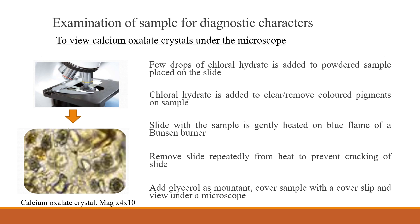The slide with the sample is gently heated on a blue flame from a Bunsen burner. While heating, care is taken not to crack the slide, so the slide is repeatedly removed from the flame. After the process of heating, glycerol is added, the sample is covered with a glass cover slip, and viewed under the microscope. This is an image representative of calcium oxalate crystals that can be seen under the microscope.